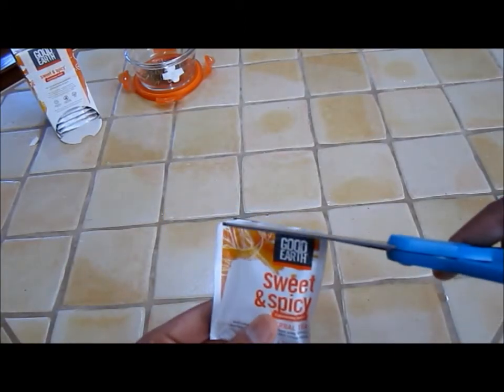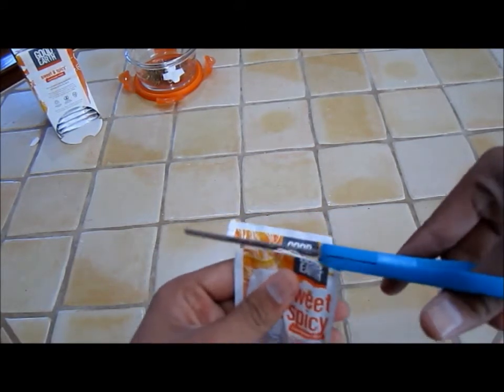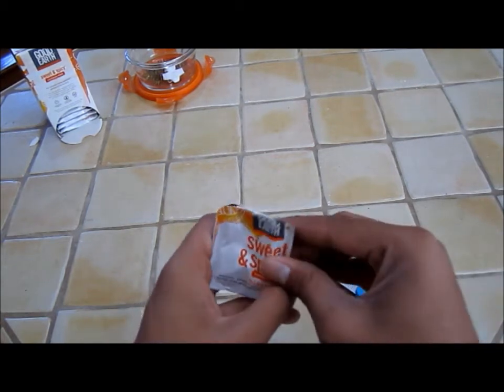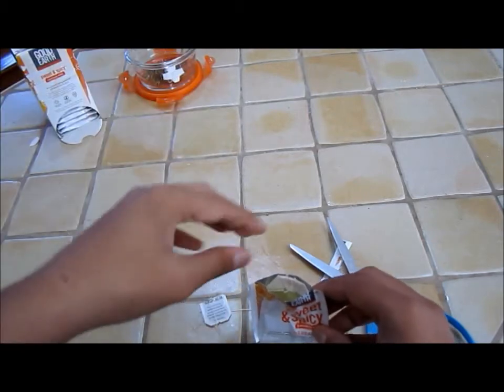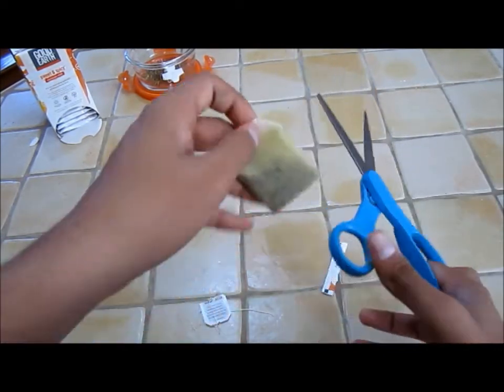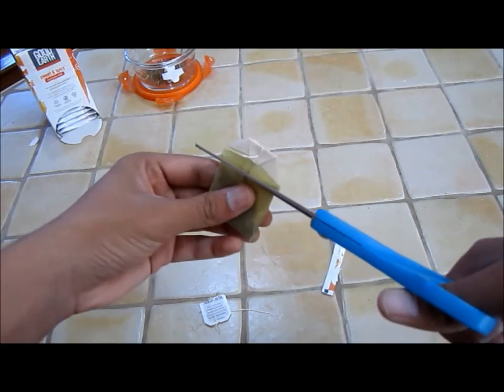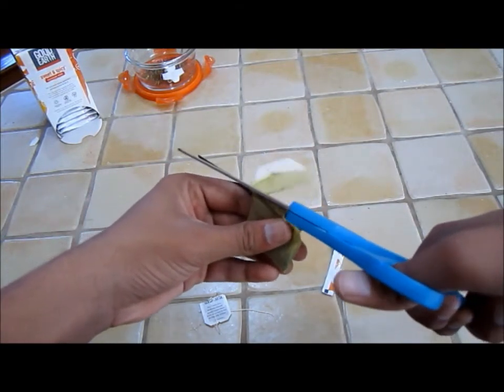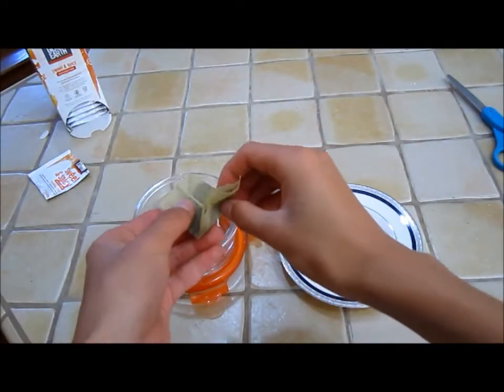Step 1. Cut open the teabag with your scissors. Step 2. Use scissors to remove the string and staple. Step 3. Empty the teabag's contents into your spare cup.